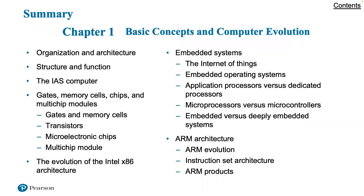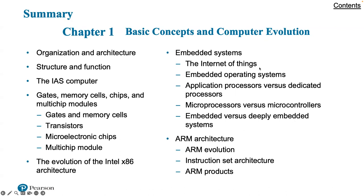That finishes the first chapter. We've gone through organization, architecture, structure, and function of computers; introduced the IAS computer architecture as one of the first ways of conceiving it; gave an overview of how various components form a computer architecture implementation; went through the evolution of the Intel x86 architecture; discussed embedded systems and the Internet of Things; and finished with the ARM architectures and a quick overview of ARM products. Thank you very much.